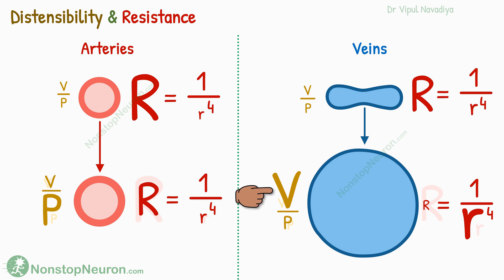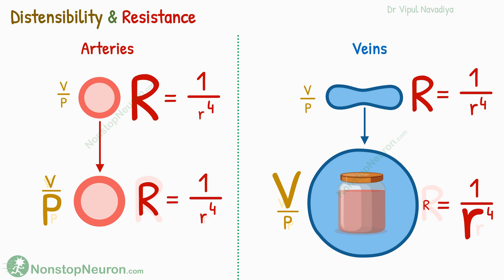But at the same time, this huge expansion of veins without much rise in pressure makes them ideal to store extra blood. Or in other words, you can say veins have a large capacity to hold blood. So for this, the veins are given the award of capacitance vessels.